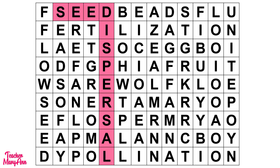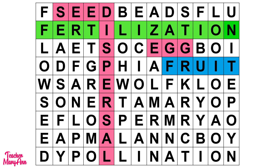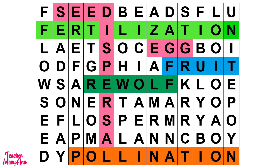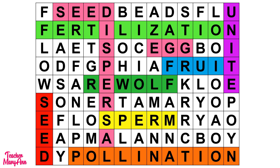We have seed dispersal, fertilization, egg, fruit, flower, pollination, sperm, seed, and unite.